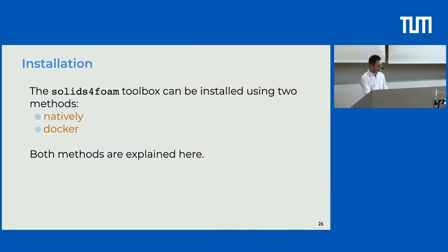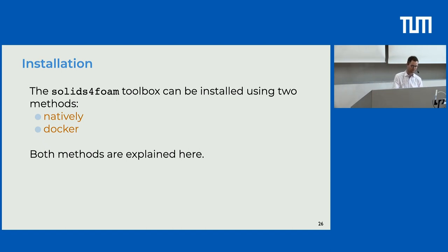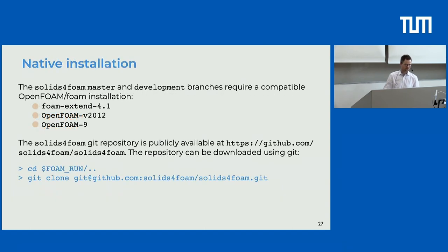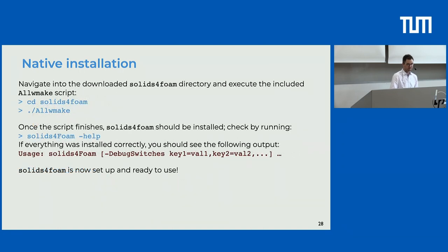Installing solids4foam: you can do it natively or via Docker. Natively, you download and build from source — if you have an OpenFOAM fork installed, you download and run the Allwmake script, which uses OpenFOAM's wmake build system. The current solids4foam 2.0 builds with Foam-Extend 4.1, OpenFOAM v2012, and OpenFOAM 9 — three primary forks that are about 95% the same but annoyingly different in some tedious ways.